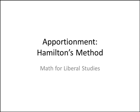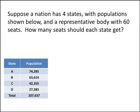In this video, we'll learn how to solve an apportionment problem using Hamilton's method. Here's a typical problem: suppose a nation has four states with populations shown below, and a representative body with 60 seats. How many seats should each state get?